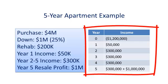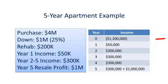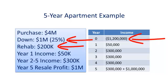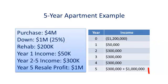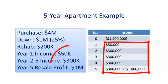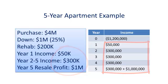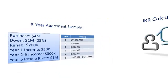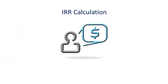We arrange the data in a t-bar. The amount in parentheses represents our initial investment at purchase, year zero, and is a negative number because we're putting money into the property. The positive numbers in year one through five indicate that we're getting money out.